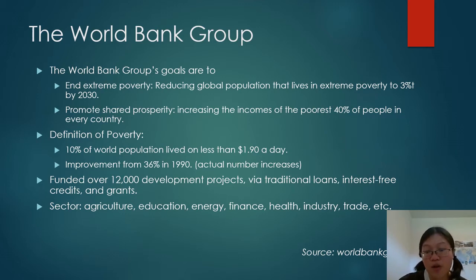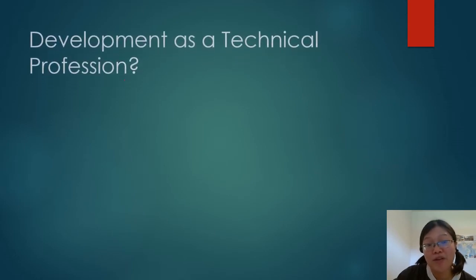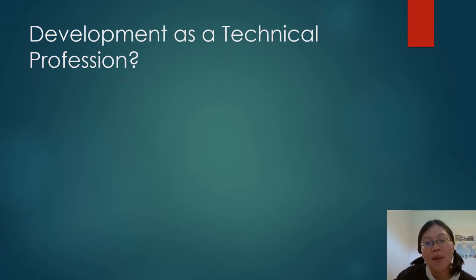If you remember from the last part of our lecture, we talked about the Sustainable Development Goals — there are 17 different goals involving different sectors that the development sector is working on. With all these definitions and indicators for measuring progress, it seems like development language can be very technical. That's what I mean by development as a technical profession.